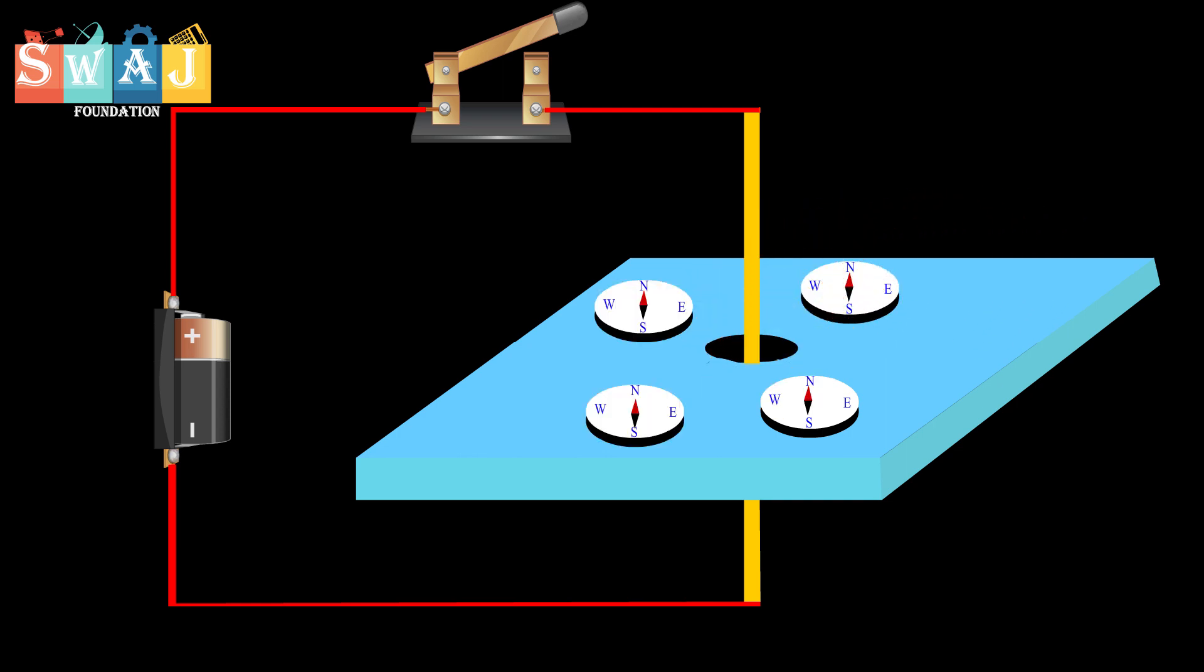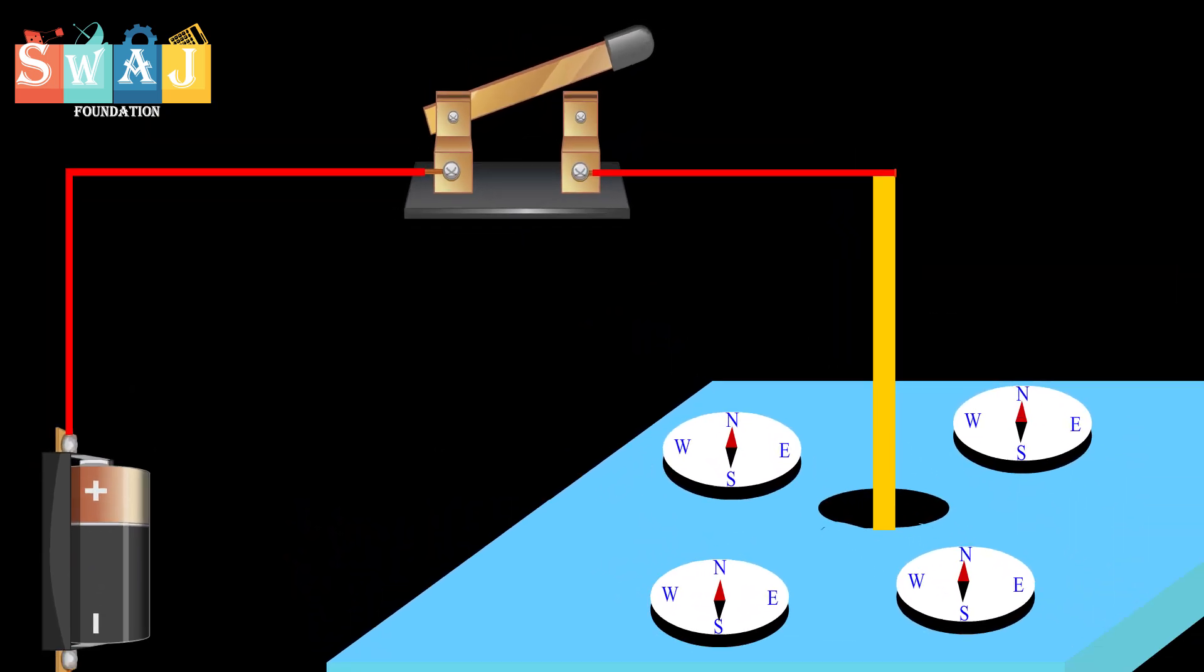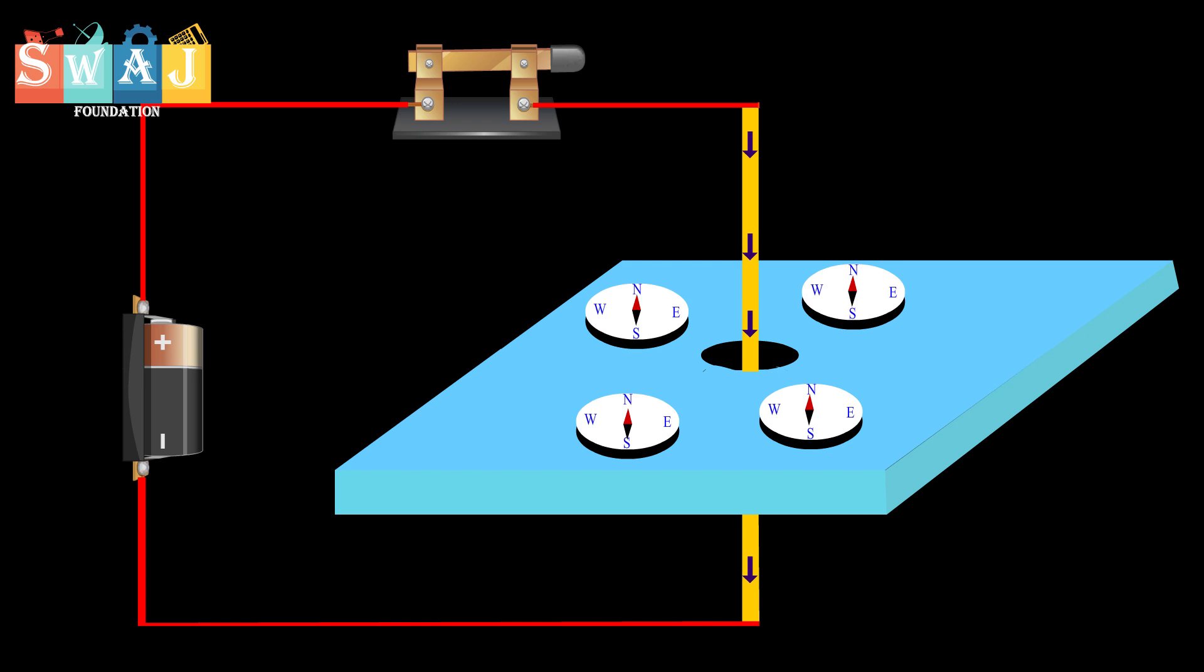All the compass needles will point in the direction of north-south when the switch is open. After closing the switch, a heavy current will pass through the wire. It will be seen that the needles will rotate and will set themselves tangential to the circle.